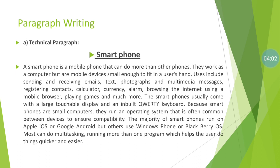The smartphone usually comes with a large touchable display and an inbuilt quality keyboard. Because smartphones are small computers, they have an operating system that is often common between devices for user compatibility. The majority of smartphones run on Apple's operating system or Google Android, but others use Windows Phone or BlackBerry operating systems. Most can do multitasking — running more than one program — which helps users work quicker and easier.